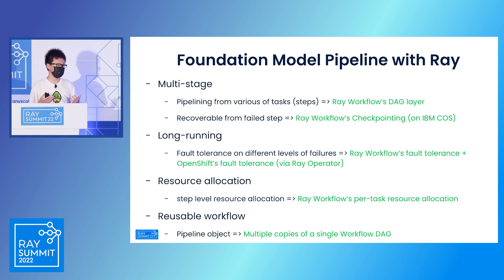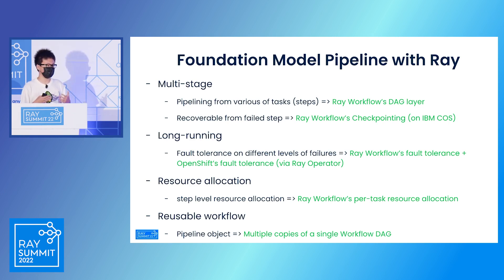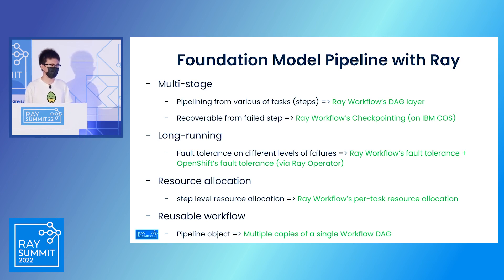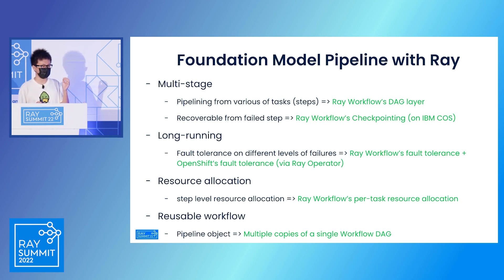This is done by installing a Ray operator in our cluster, because OpenShift is essentially also a Kubernetes cluster. By combining these two together, we achieve fault tolerance at all various levels of failures. For resource allocation, since Ray Workflow is powered by Ray tasks, we can also do very precise per-task resource allocation, just as with Ray core tasks.